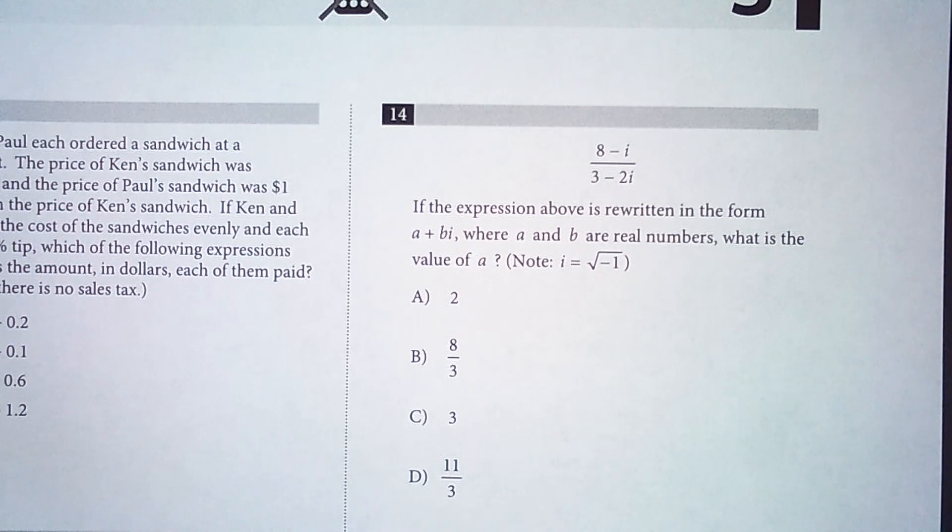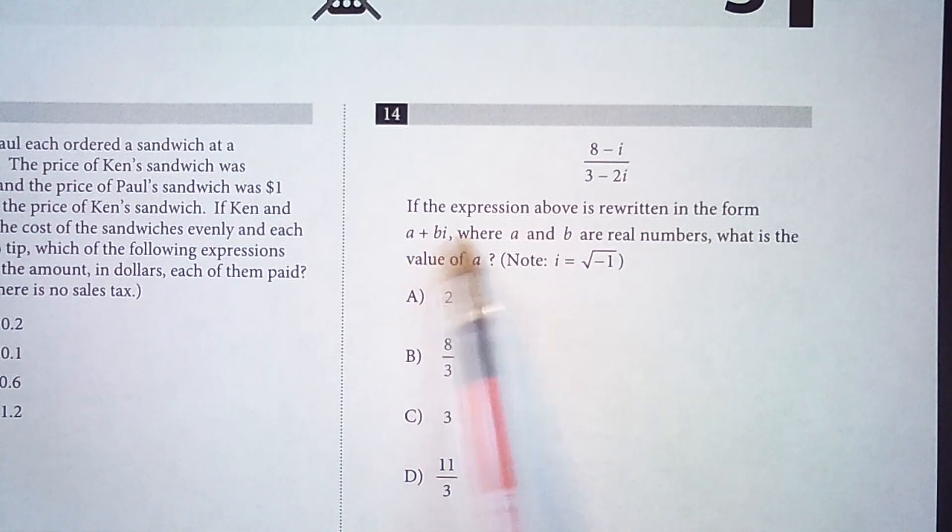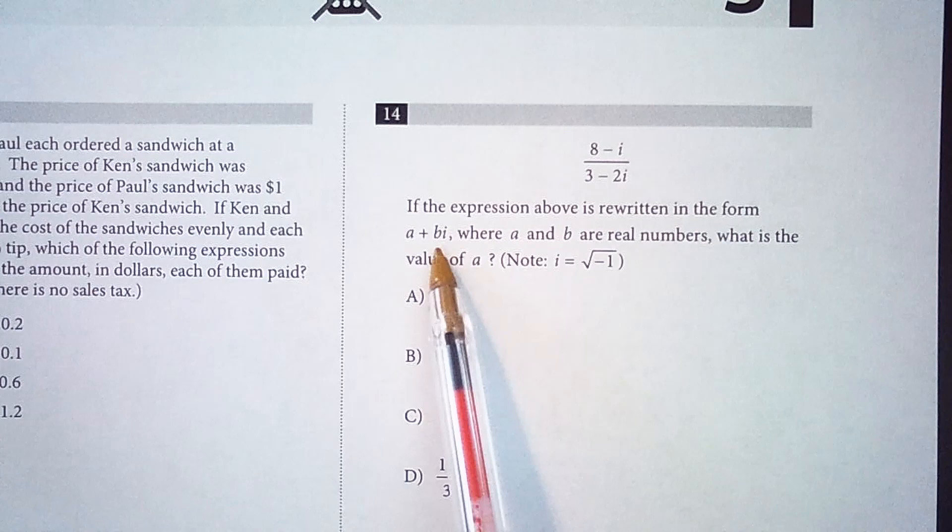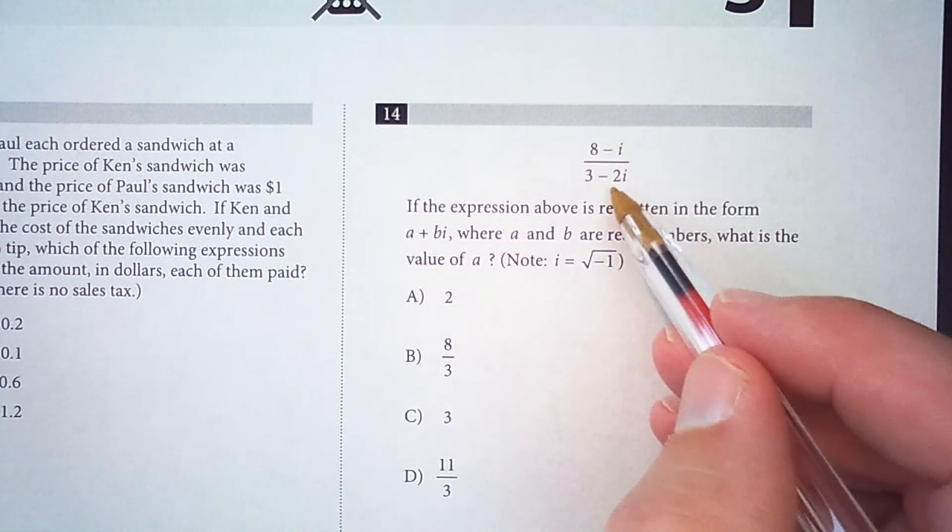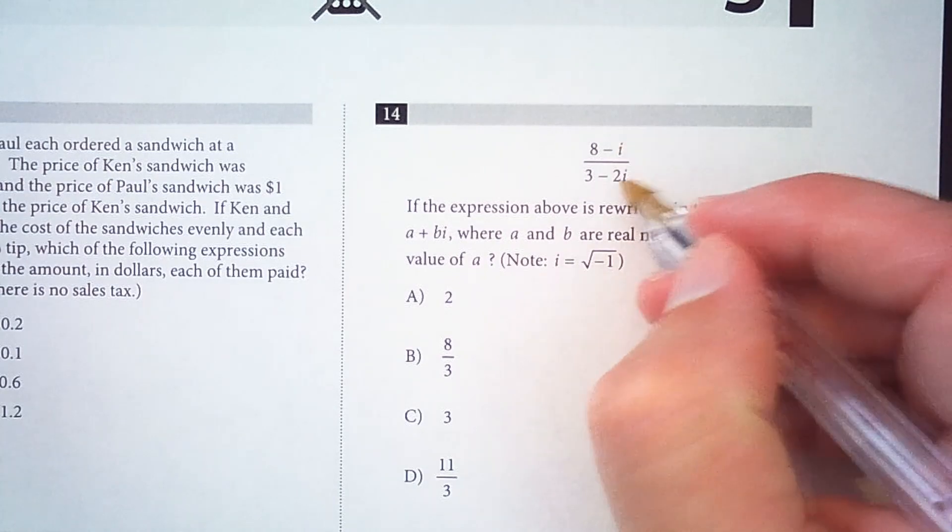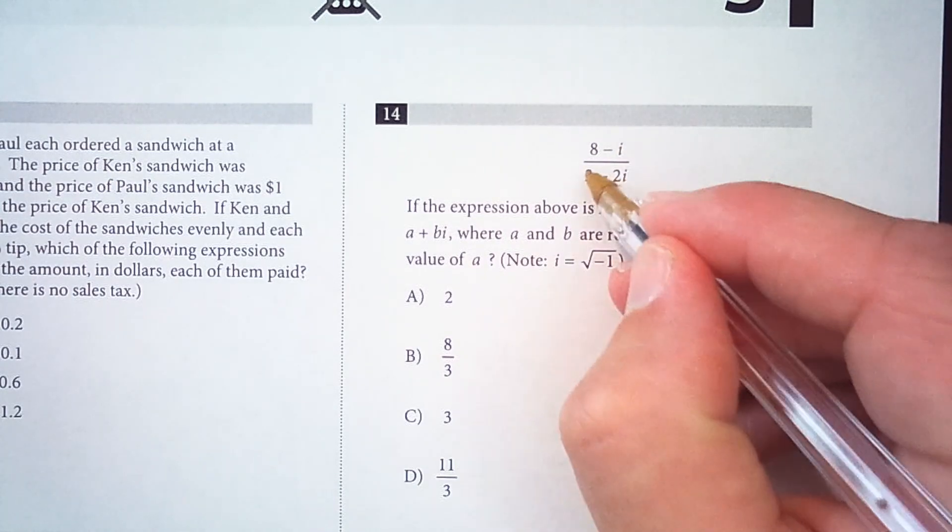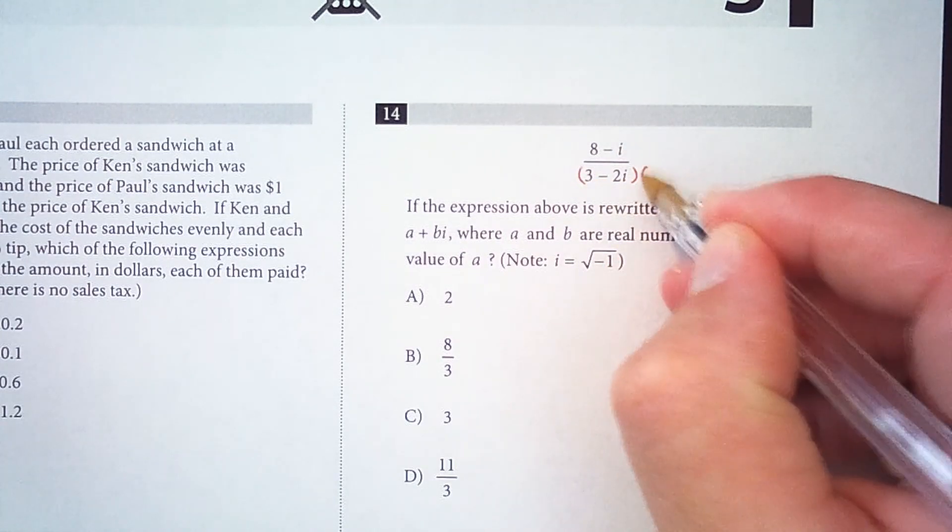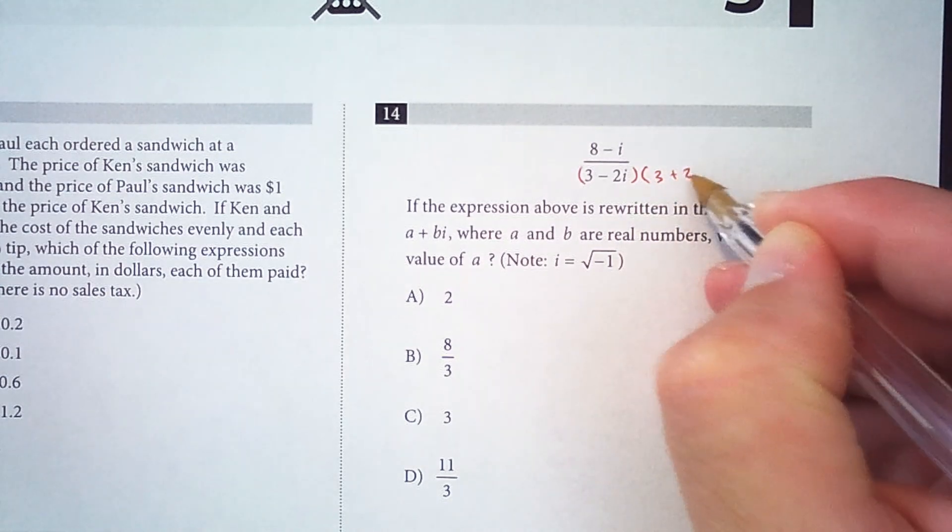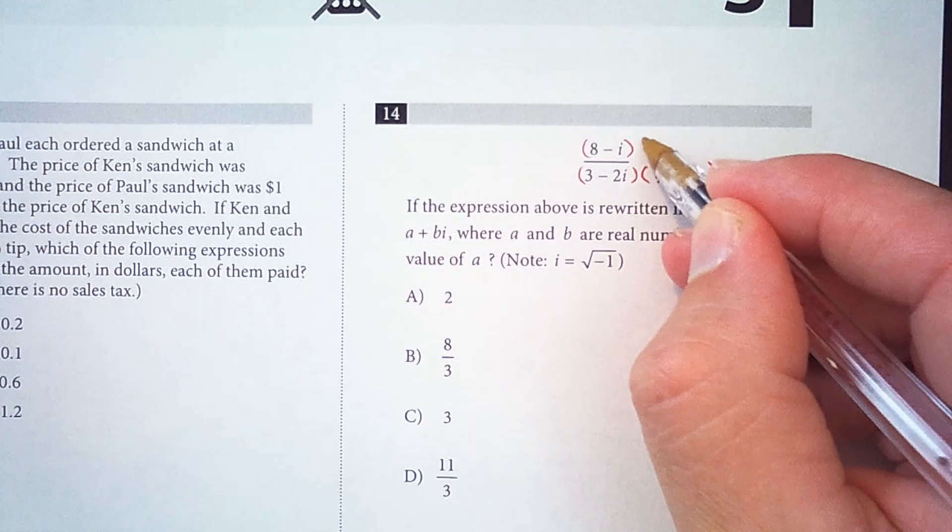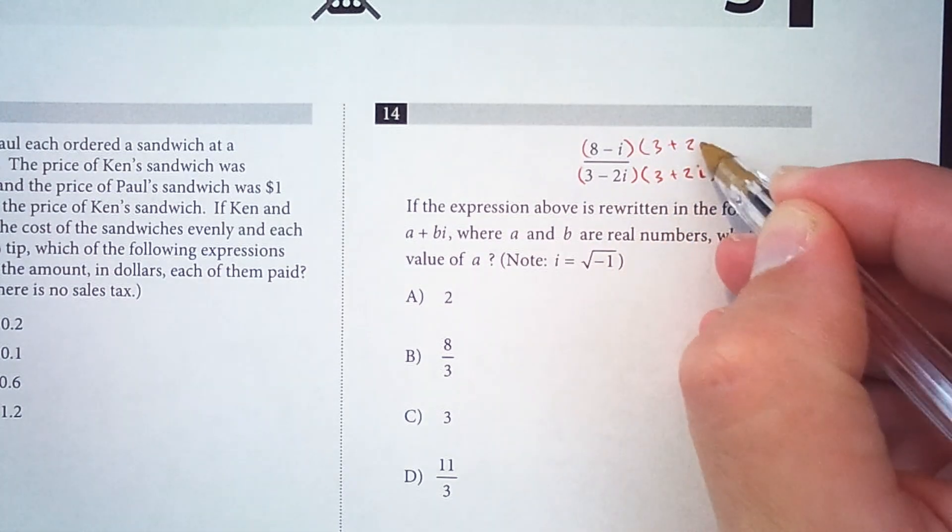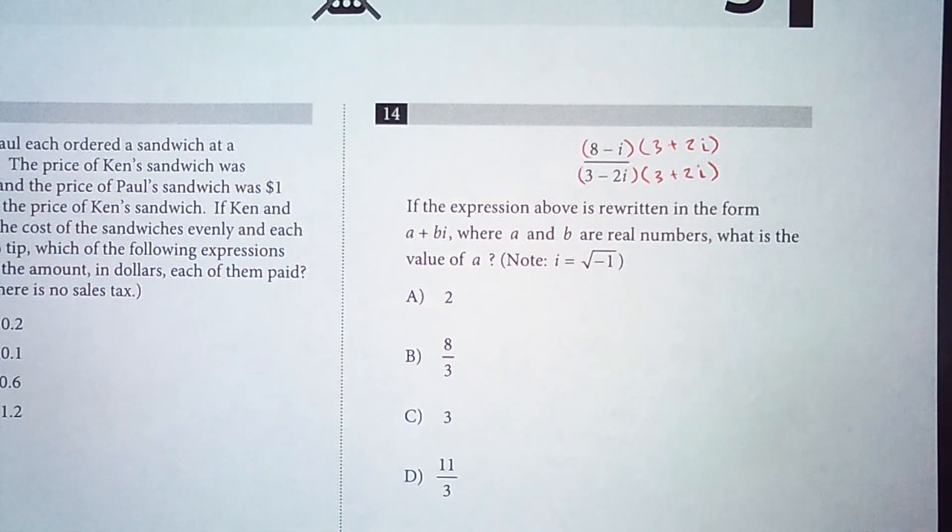So in order to rewrite this complex number in the form a plus bi, we need to multiply the numerator and denominator by the conjugate of the denominator. The denominator is 3 minus 2i, so the conjugate is 3 plus 2i. We are multiplying numerator and denominator by 3 plus 2i.